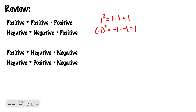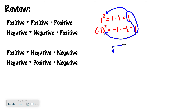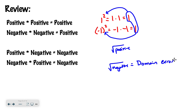Remember, a square root is when you work backwards. So that means you're taking a positive number and trying to get back to the original. That means you can only take the square root of a positive number. If you try to take the square root of a negative number, it's not going to work, because a positive times a positive is positive, and a negative times a negative is positive — and squares are where you multiply the same thing twice. So if you try to do the square root of a negative number on your calculator, it's going to say domain error. There is no answer for that type of problem.